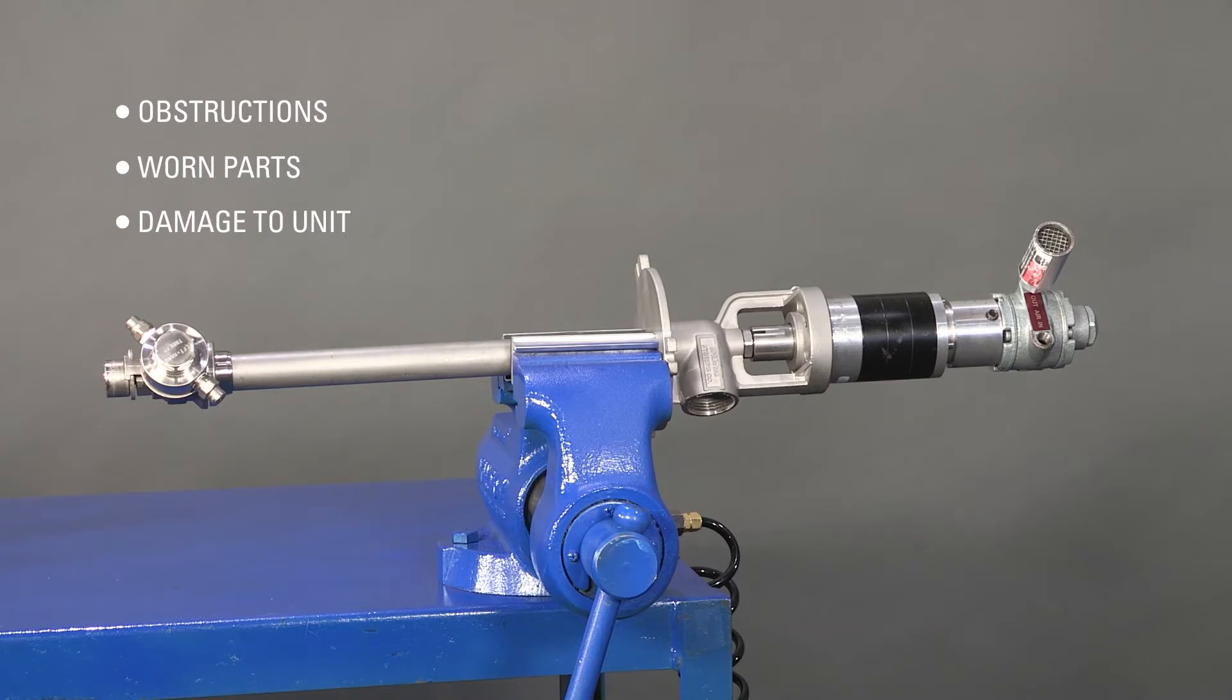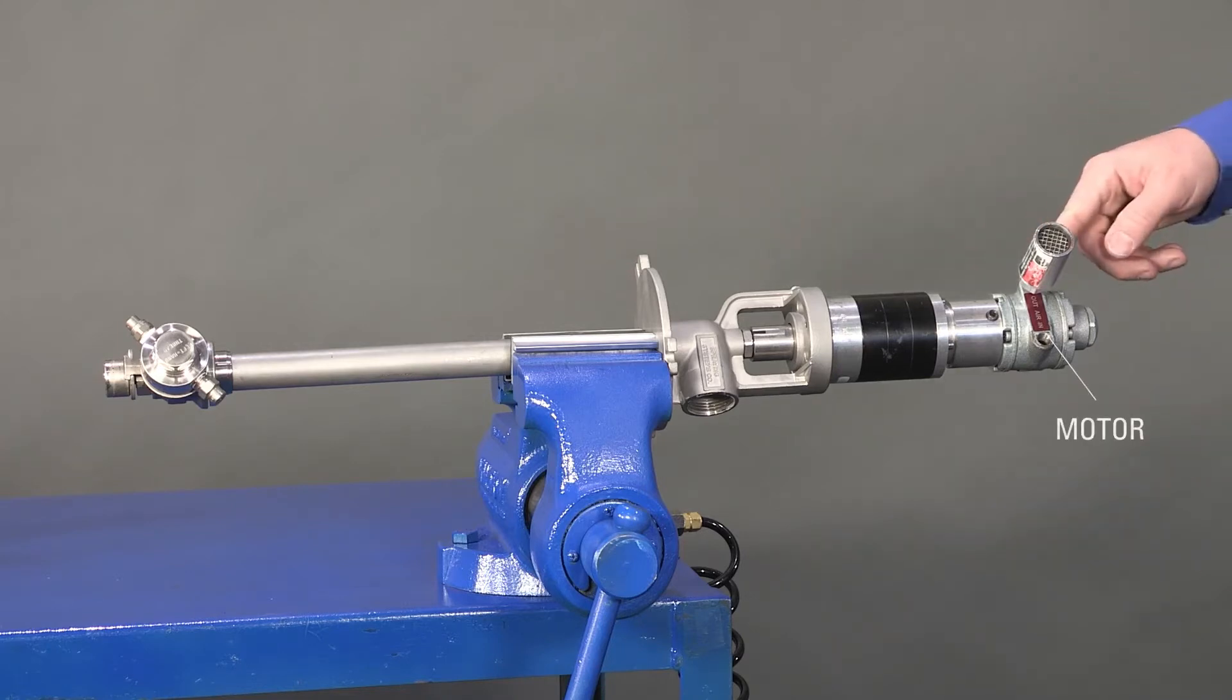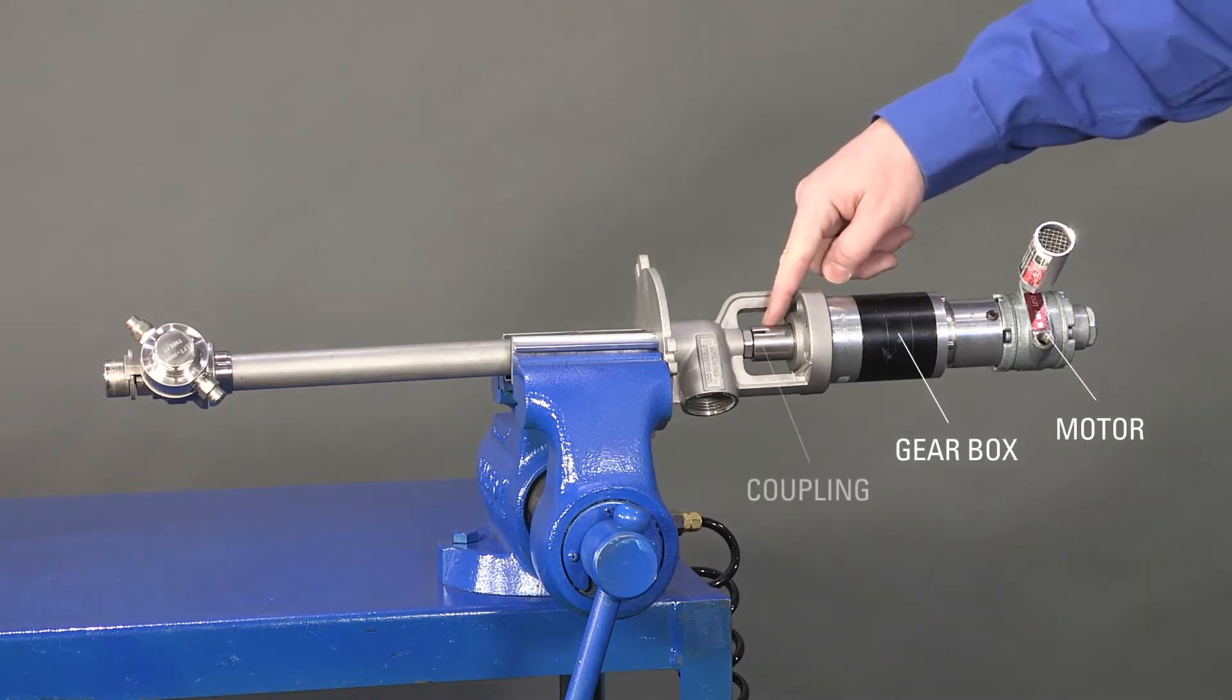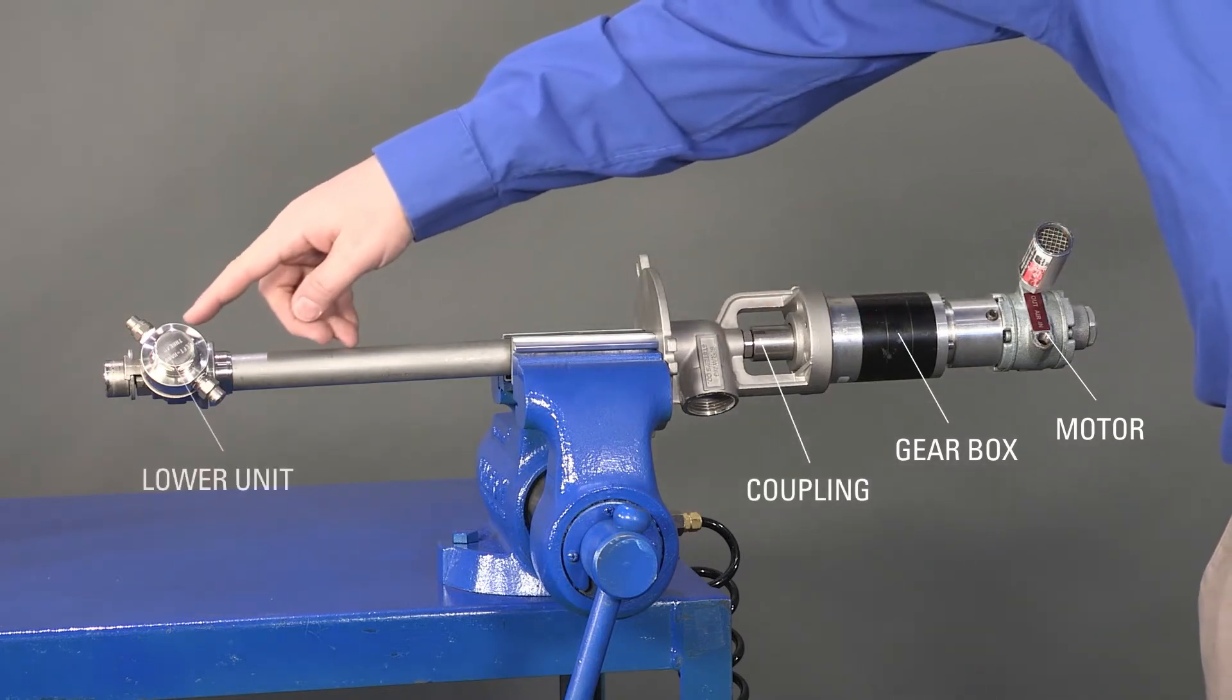If you're having trouble with an AA-190 unit not rotating, the first thing to determine is if the problem resides in the motor, the gearbox, the coupling, or the lower unit.